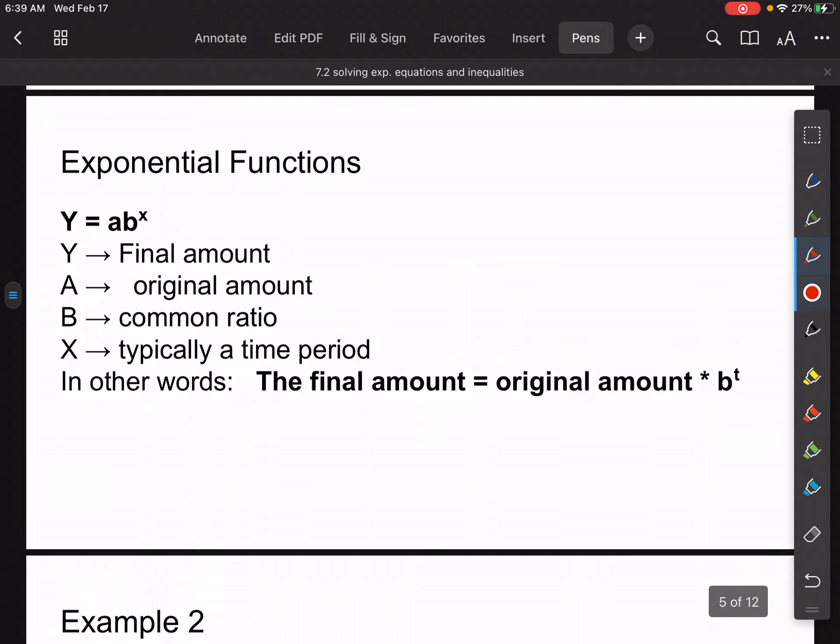This is an important slide, so make sure you guys take good notes on this. Exponential functions are in this form: y equals a times b to the x. So if I'm going to create an exponential function given some data, it's important to know what each of these things stands for. So y, in this case, stands for the final amount of something. The a always stands for the original amount of something. The b is just the common ratio.